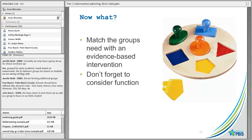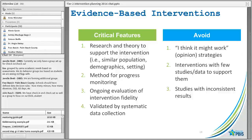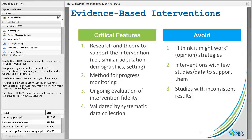Now we need to match the groups with an evidence-based intervention, and we won't forget function. When we're talking evidence-based intervention, we're really talking about things that have critical features: there's research to support the intervention, and the research has been done on similar populations. There should be a method for progress monitoring, and there should also be a way of checking fidelity so we know the intervention is being delivered the way it was meant to be.